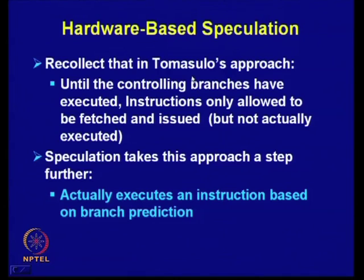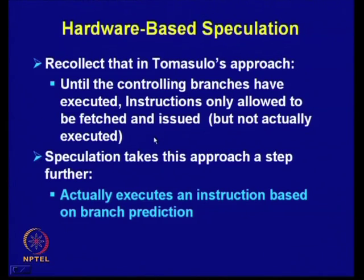Recall Tomasulo's approach: until the controlling branches have executed, instructions are only allowed to be fetched and issued, but not actually executed. The controlling branches must execute before subsequent instructions can execute; before that, they can be fetched and issued, but execution will not take place. Speculation takes this a step further — it will actually execute an instruction based on branch prediction, continuing execution in the predicted direction.